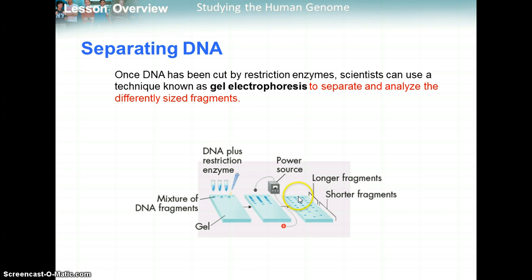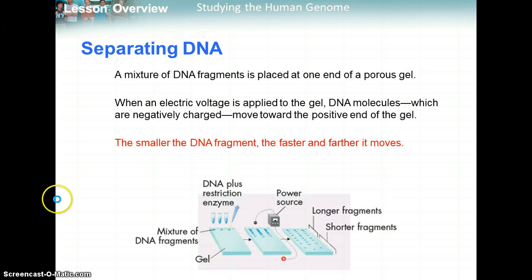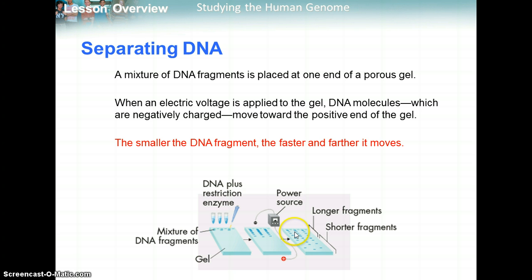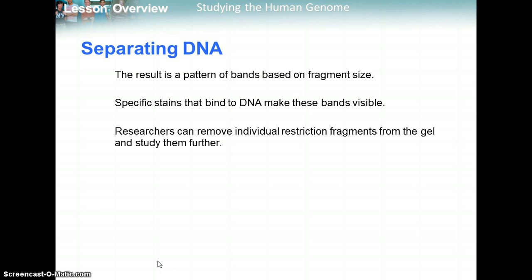The bigger, longer fragments stay near where you loaded the DNA, and you end up with smaller fragments closer to the end that are able to travel through the gel. A mixture of DNA fragments is placed at one end with an electric voltage applied. DNA is negatively charged, so it moves to the positive end. The smaller the DNA fragment, the faster and farther it moves — so smaller segments are at the bottom and bigger, longer fragments stay near the top where you loaded the DNA. The result is a pattern of bands based on fragment size, and specific stains that bind to DNA make these bands visible. Researchers can then remove individual restriction fragments from the gel to study them further.